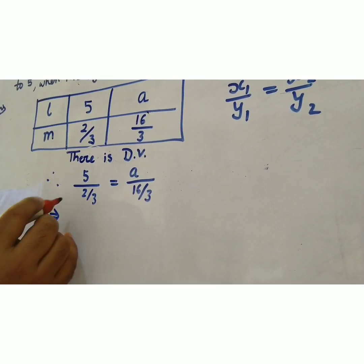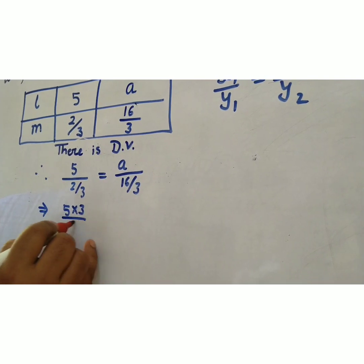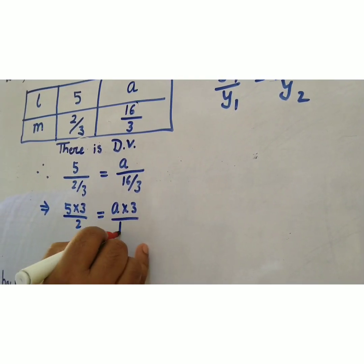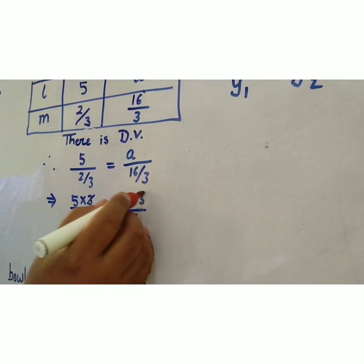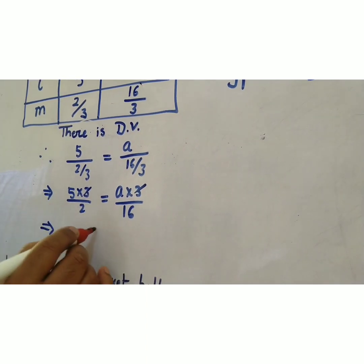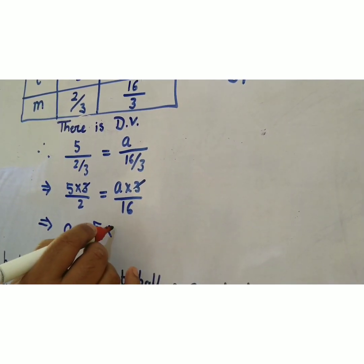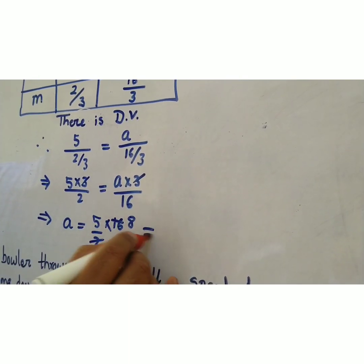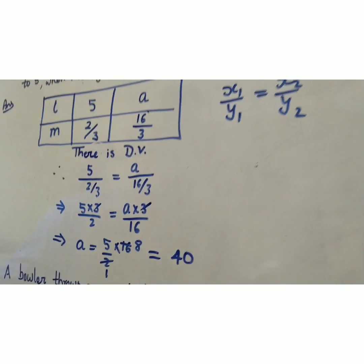This can be written as 5 × 3/2 is equal to A × 3/16. The 3s cancel, which implies A is equal to 5/2 × 16. 2 × 8 equals 16, and 5 × 8 equals 40. So the required value of L is 40.